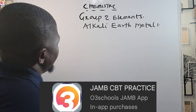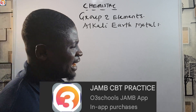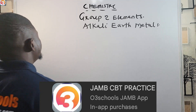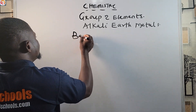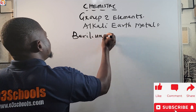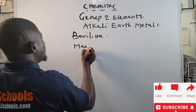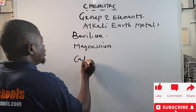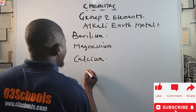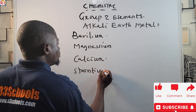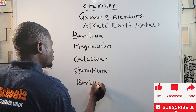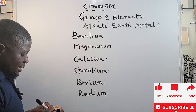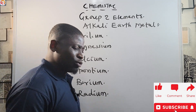Now, back to today's lesson on group two elements. The elements in this group include: Beryllium, Magnesium, Calcium, Strontium, Barium, and Radium. These are the elements found in group two of the periodic table.